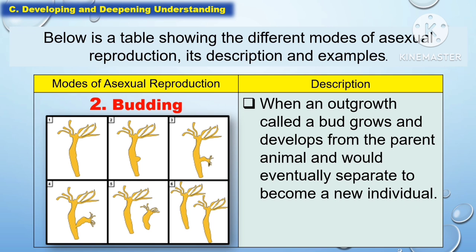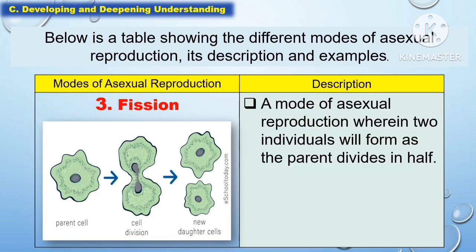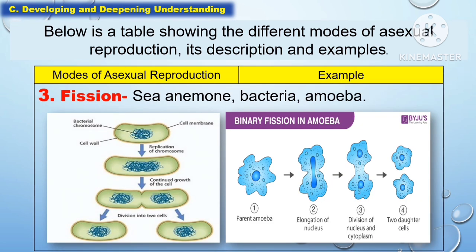Another mode of asexual reproduction is budding, when an outgrowth called the bud grows and develops from the parent animal and would eventually separate to become a new individual. Examples for this are coral, hydra, and yeast. Another mode of asexual reproduction is fission, a mode wherein two individuals will form as the parent divides in half. Examples include sea anemone, bacteria, and amoeba.